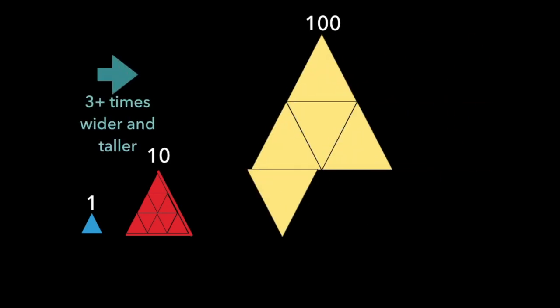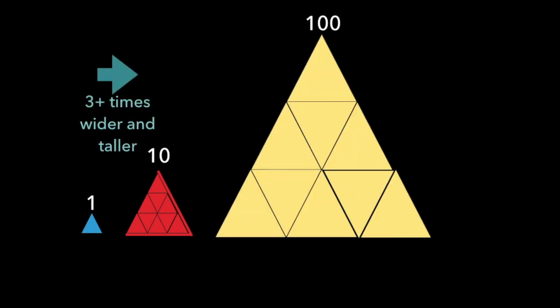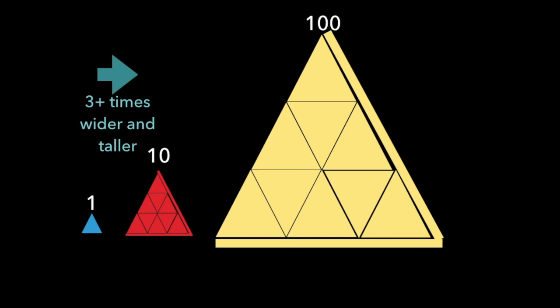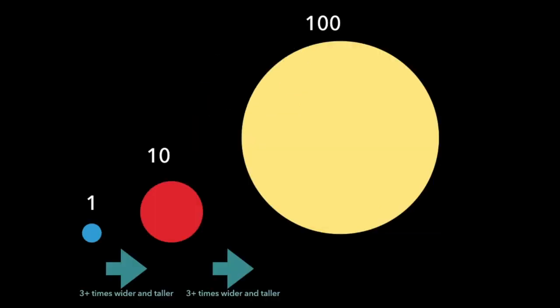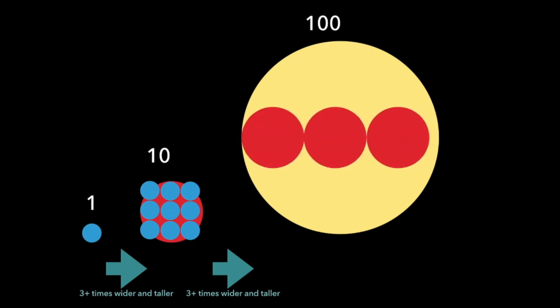Let's consider triangles. What do you notice here? Could it even work with circles? Does it look like about 10 of the smaller circles would fit into the next larger circle if we increase the diameter by a little more than 3 each time?